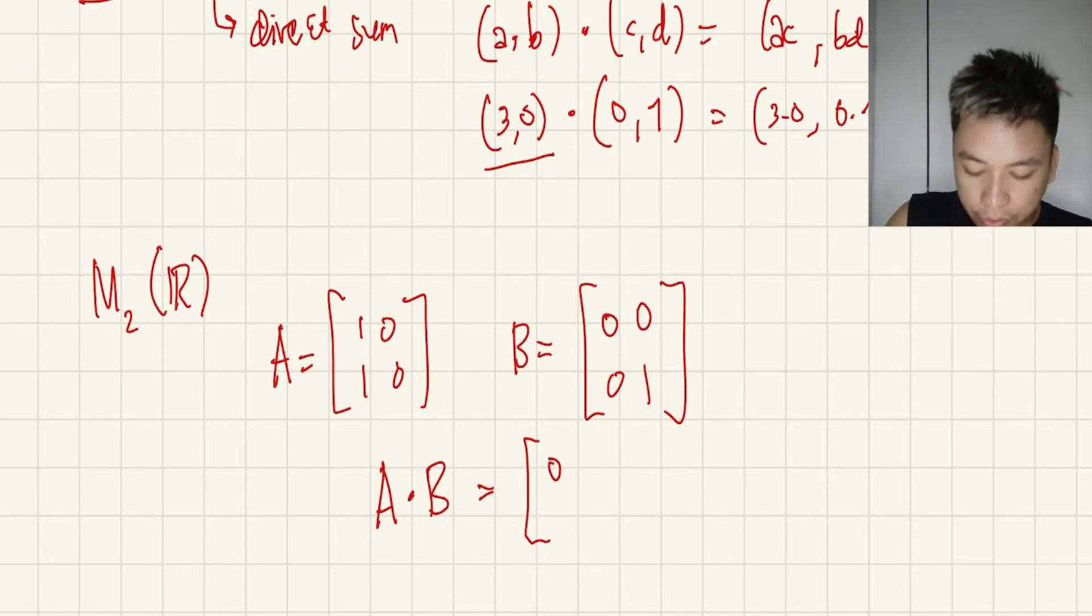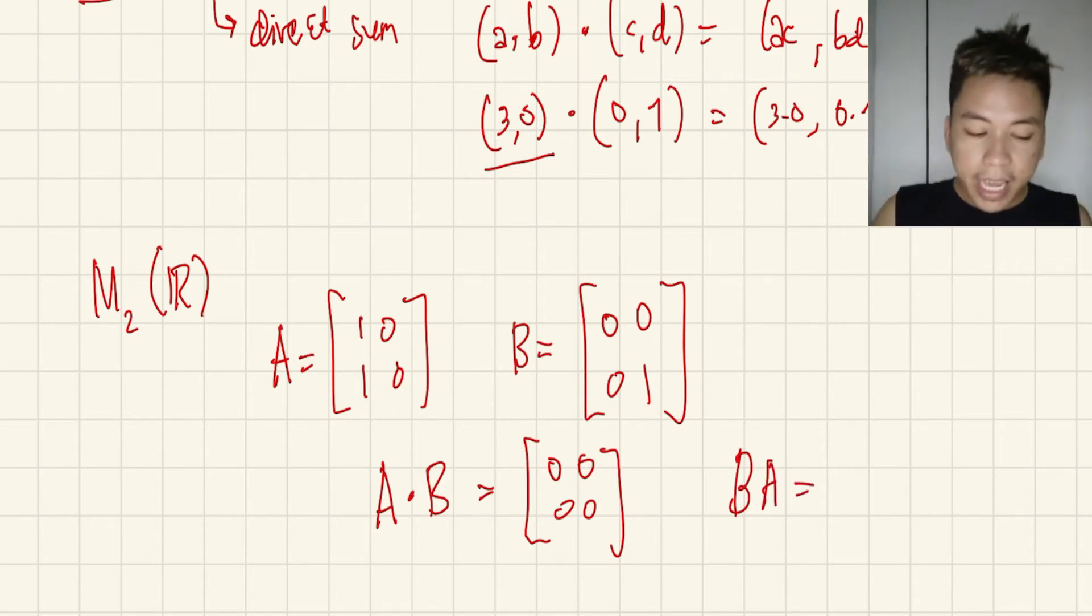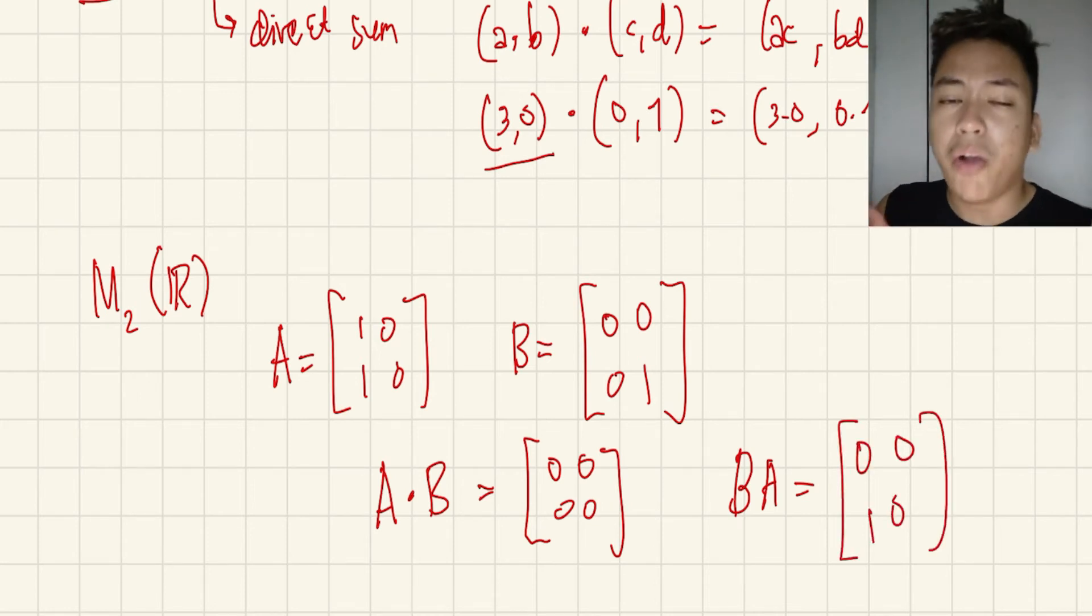If you're going to take the multiplication of these two matrices here, the result is [0,0; 0,0]. However, if you multiply B and A, you'll get [0,0; 1,0]. So if you notice, of course, we already know from linear algebra that multiplication of matrices is not commutative. So meaning that AB is not the same as BA.